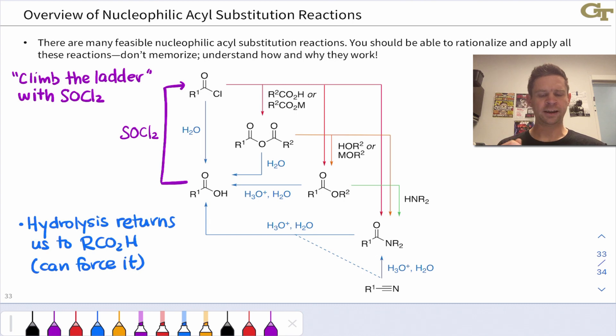We also saw how the nitrile is kind of a spiritual or honorary carboxylic acid derivative. The addition of water to a nitrile produces an amide, and then we're off to all the chemistry of amides from there. And nitriles can be conveniently made using SN2 reactions. They can also be reduced to amines in the exact same way that amides can be reduced to amines.